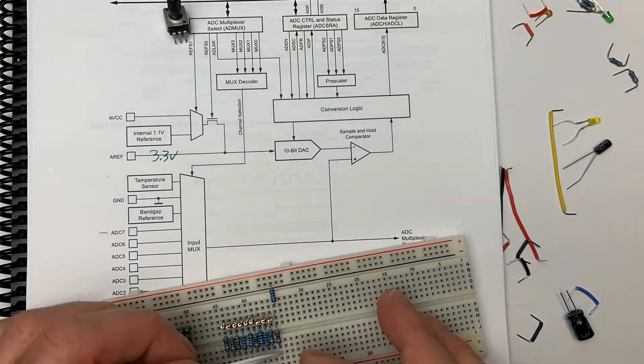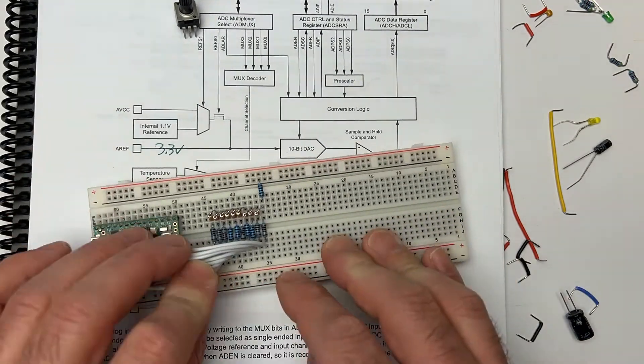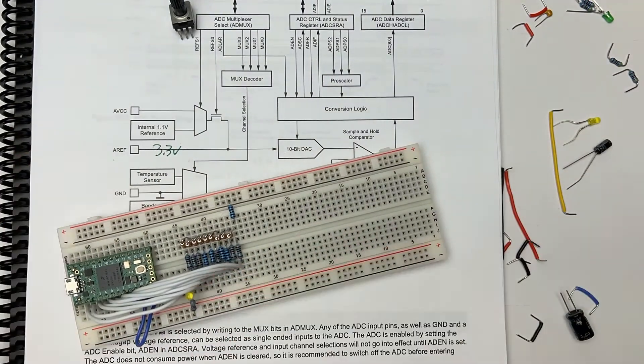For our comparator, an LM393 will be good enough. We aren't trying to make the world's fastest ADC.